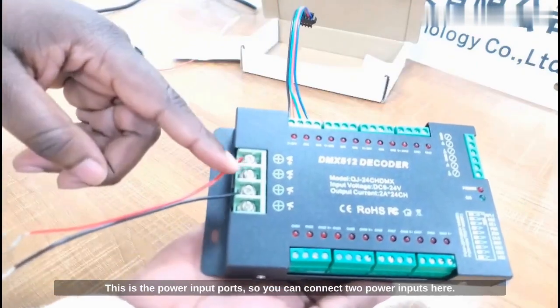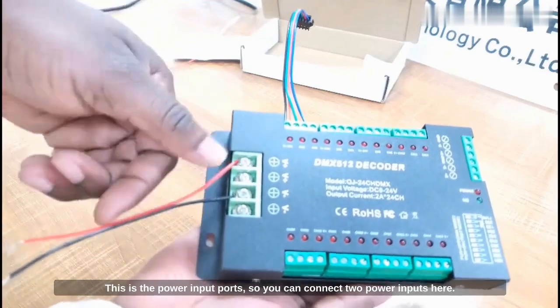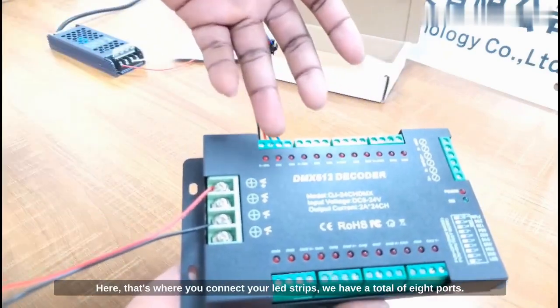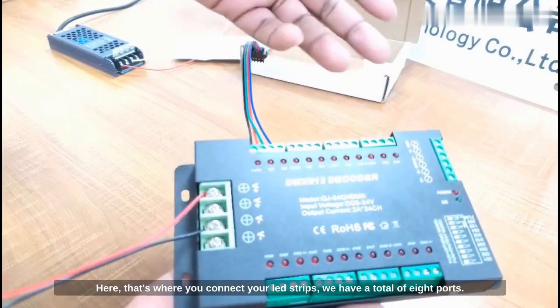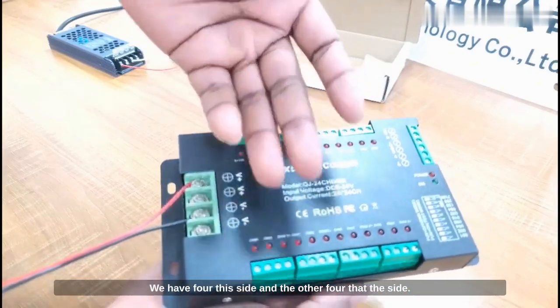This is the power input ports, so you can connect two power inputs here. Here, that's where you connect your LED strip. So we have a total of eight ports, we have four this side and the other four on the other side.